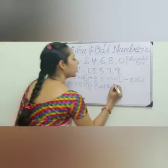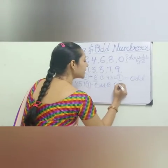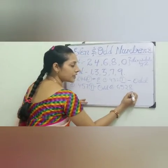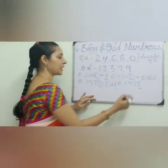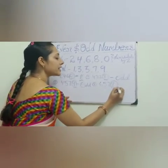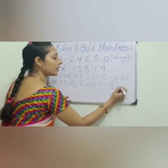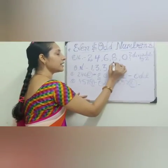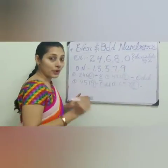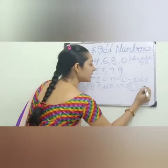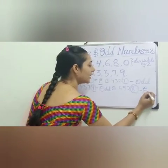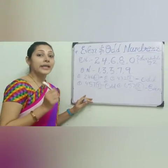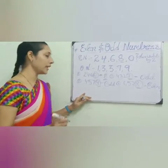One more. The number is 6, 5, 2, 8. So what do we have to see? The ones place. What is this number called? The ones place digit is 8. Where is it? Here. So what is it called? This is an even number. Very good.